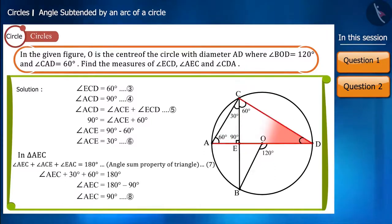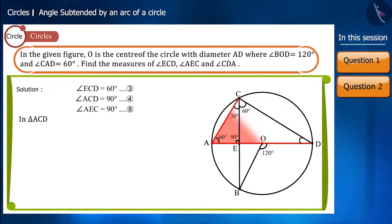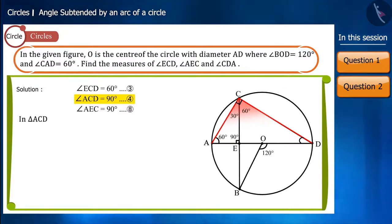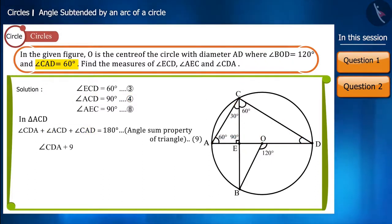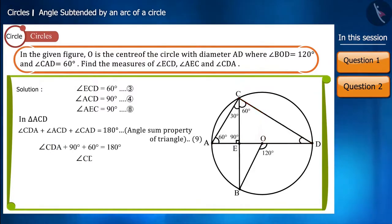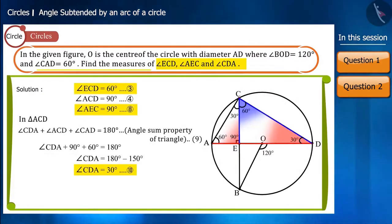Now we have to find the value of angle CDA. In triangle ACD, the value of angle CAD is given to us. Using the angle sum property of a triangle, we will get the value of angle CDA as 30 degrees. Thus, we found the values of all three angles.